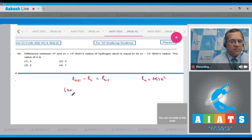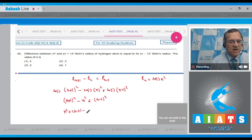0.53 × (n+1)² - 0.53 × n² = 0.53 × (n-1)². Simplifying: (n+1)² - n² = (n-1)². Expanding and solving: n² + 2n + 1 - n² = n² - 2n + 1, which gives 4n = n², therefore n = 4. The answer is the first option.